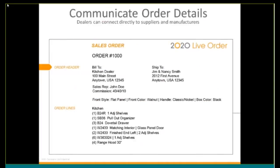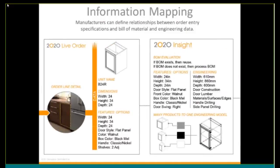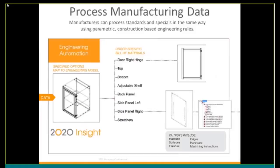The data then flows seamlessly into 2020 Live Order where dealers can communicate order details. The dealers can connect directly to suppliers and manufacturers. Next is the information mapping process from 2020 Live Order to 2020 Insight. We can see that manufacturers can define relationships between order entry specifications and bill of material and engineering data. 2020 Insight provides many products to one unique engineering model. 2020 Insight provides for process manufacturing data. Manufacturers can actually process standards and specials in the same way, using parametric construction-based engineering rules.